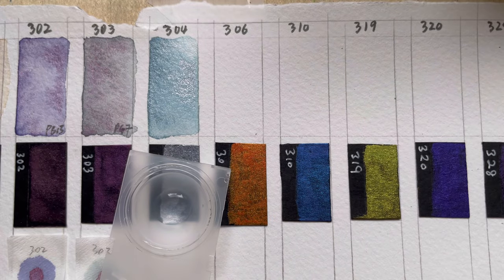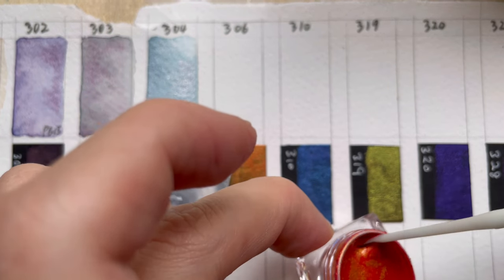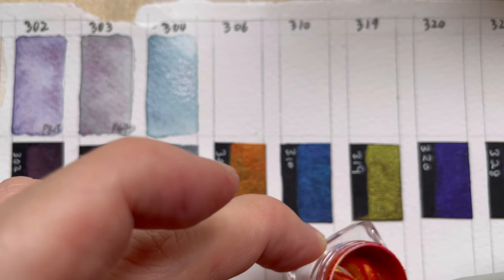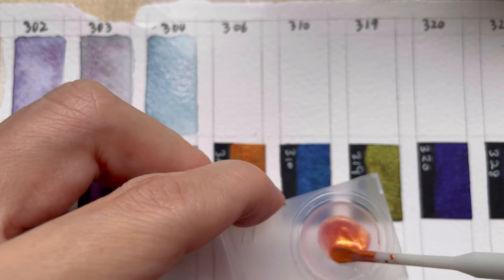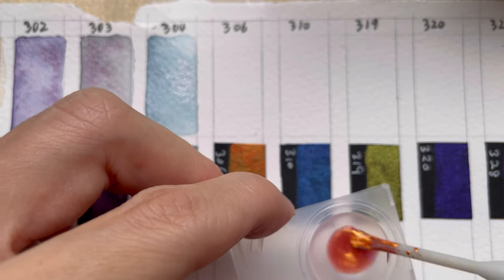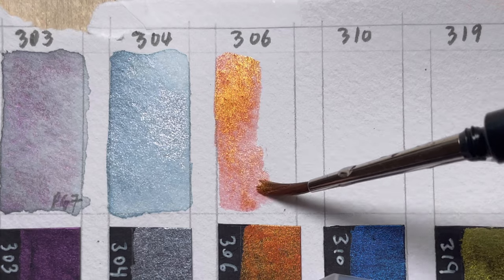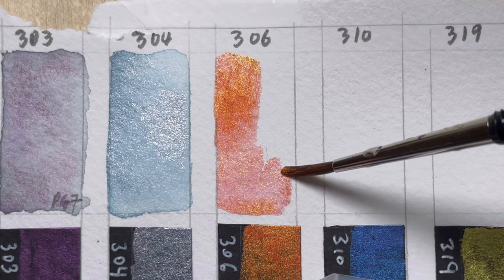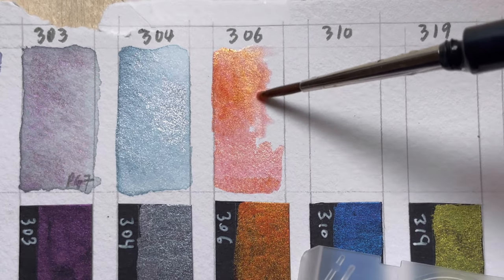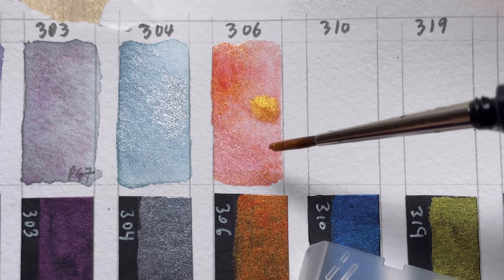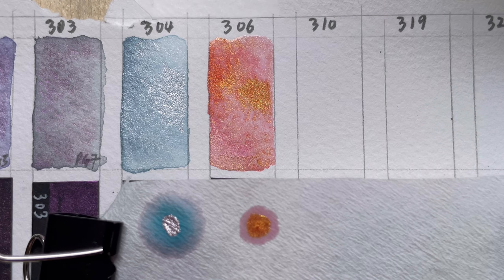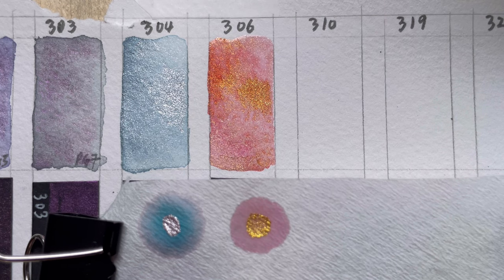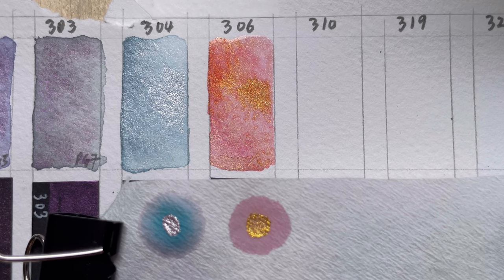Next we have 306. 306 is made from Mika and PV19. PV19 is your quinacridone rose. It's interesting when it paints, it looks like a bit of an orange with a bit of pink and also gold shimmer on top. The chromatogram is made from a center of gold shimmer with a ring of pink color surrounding it.